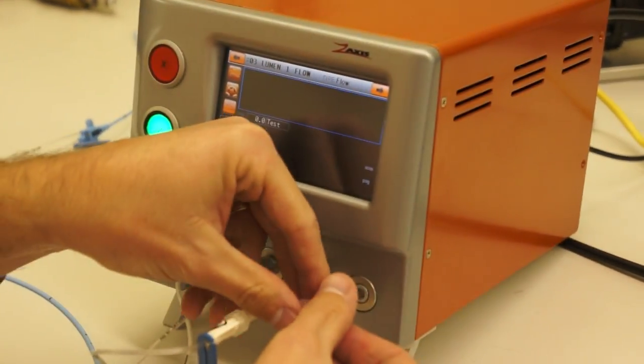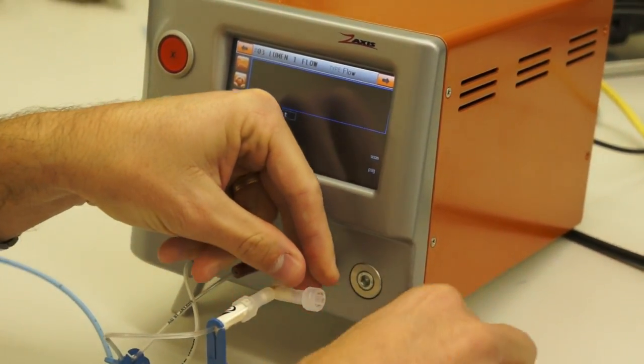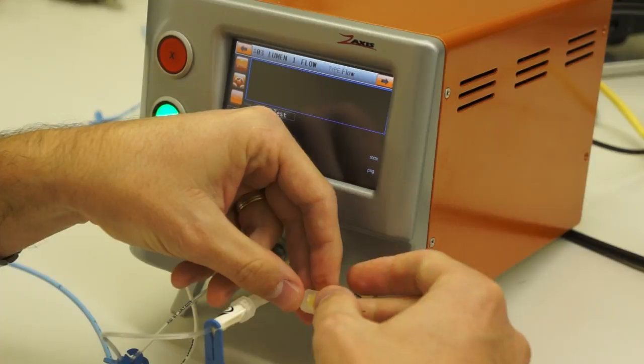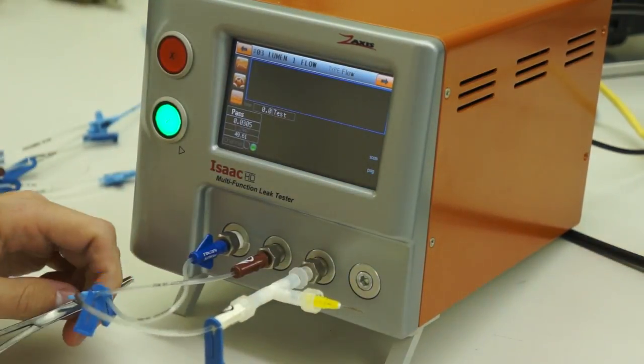I've configured the tester to introduce a 5 cc per minute leak rate to lumen 3. We'll run that sequence of tests again with the leak in it.